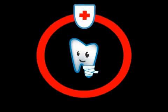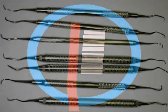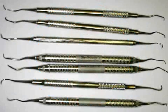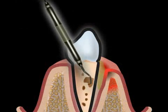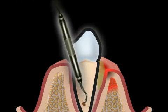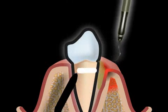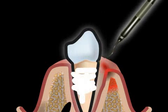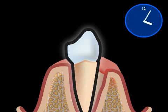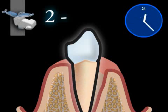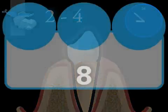At the beginning of periodontal treatment, teeth that aren't worth preserving must be extracted, and necessary root canal treatments must be performed or redone. Afterwards, an intensive cleaning phase with special periodontal instruments takes place. During this initial cleaning phase, concretions and pocket tissue are removed, and rough root surfaces are smoothed. This is done painlessly for the patient by means of a local anesthetic ointment. Such thorough cleaning can be very time-consuming, so the initial treatment usually takes place in two or three sessions.